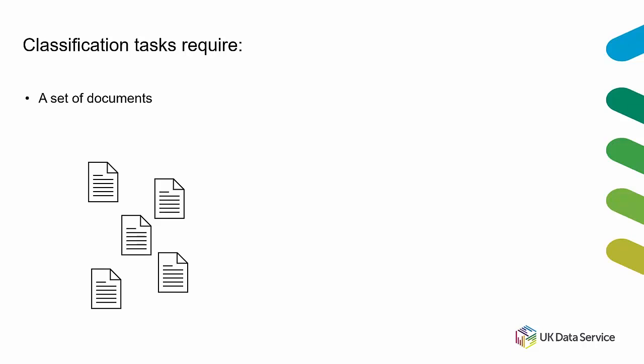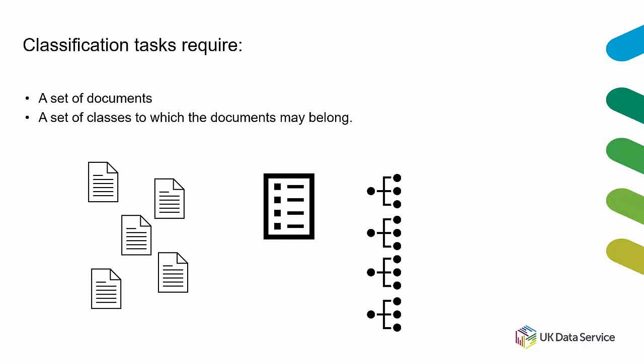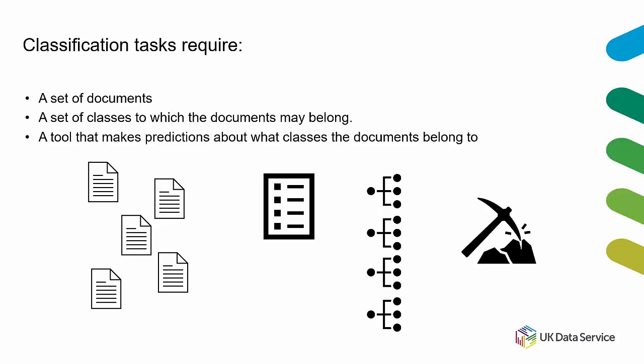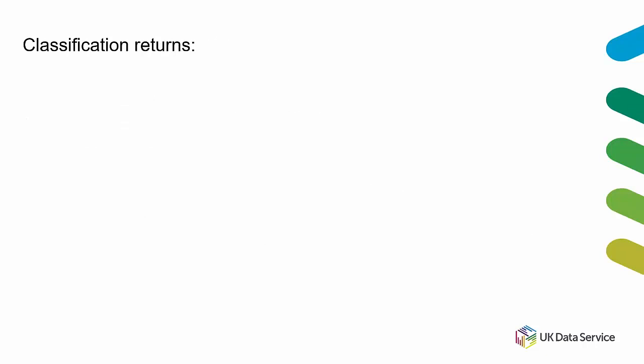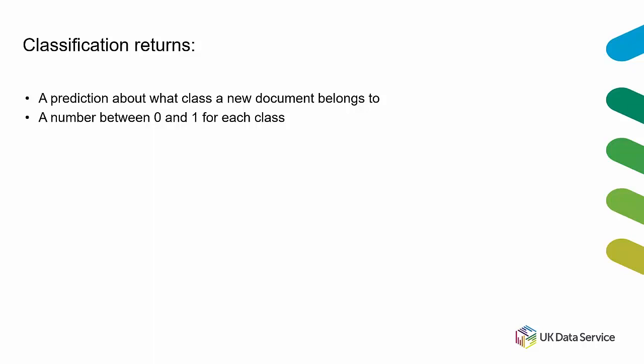To accomplish a classification task automatically you need a set of documents — in our example, the 100,000 old scientific articles. You also need a set of categories for the documents to belong to; here that would be a list of modern scientific disciplines, which could be a flat or hierarchical list. Finally, you need a tool to do the classifying. These are generally machine learning or deep learning tools — typically Naive Bayes classification tools, though other options exist.